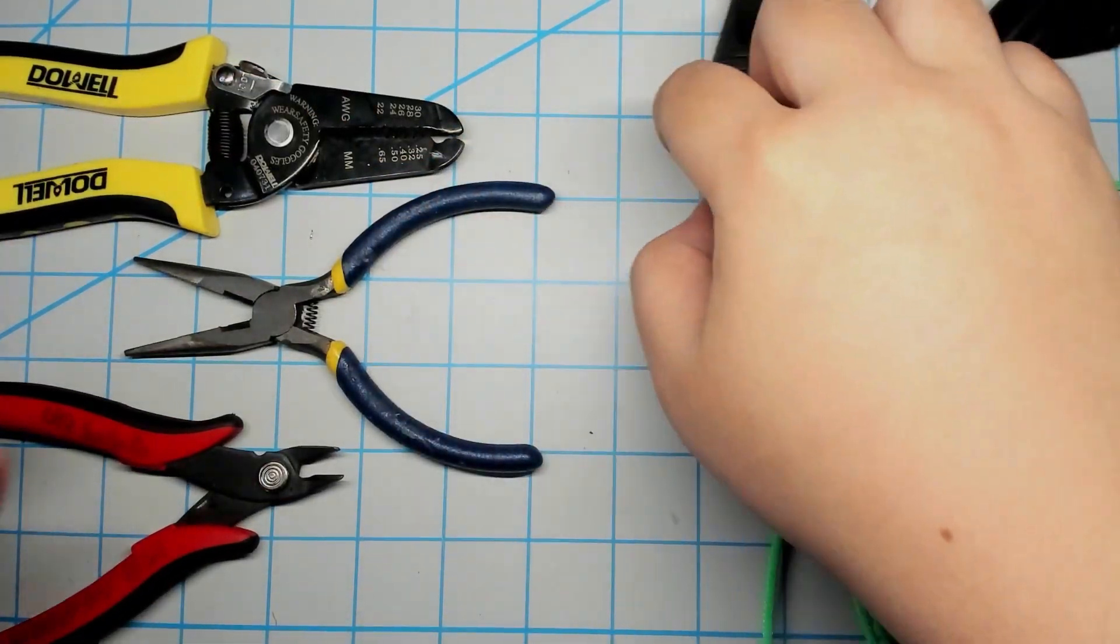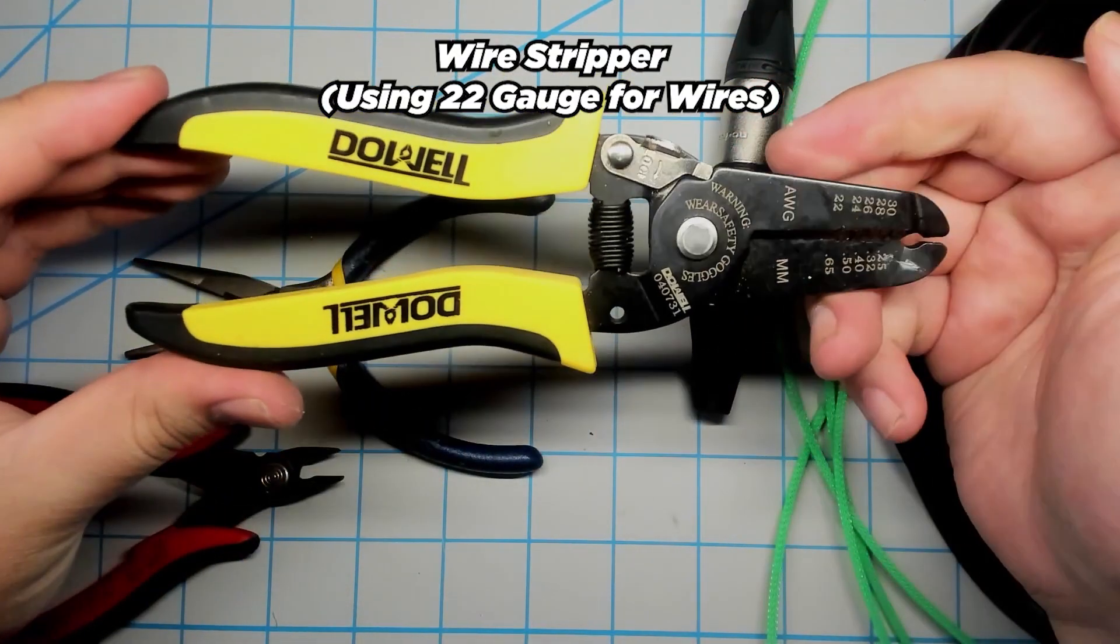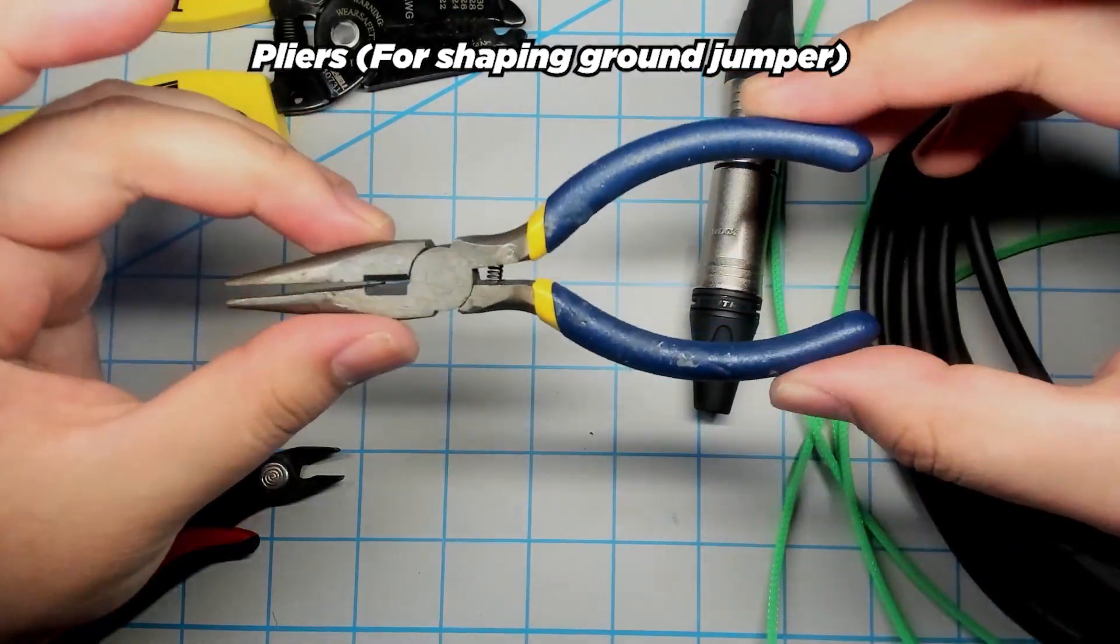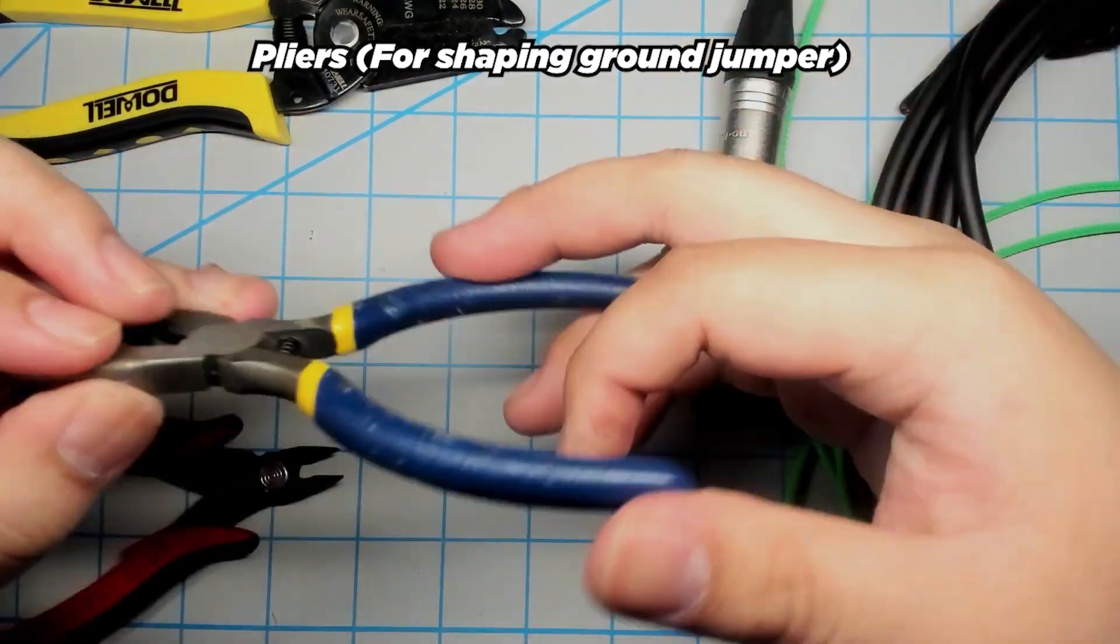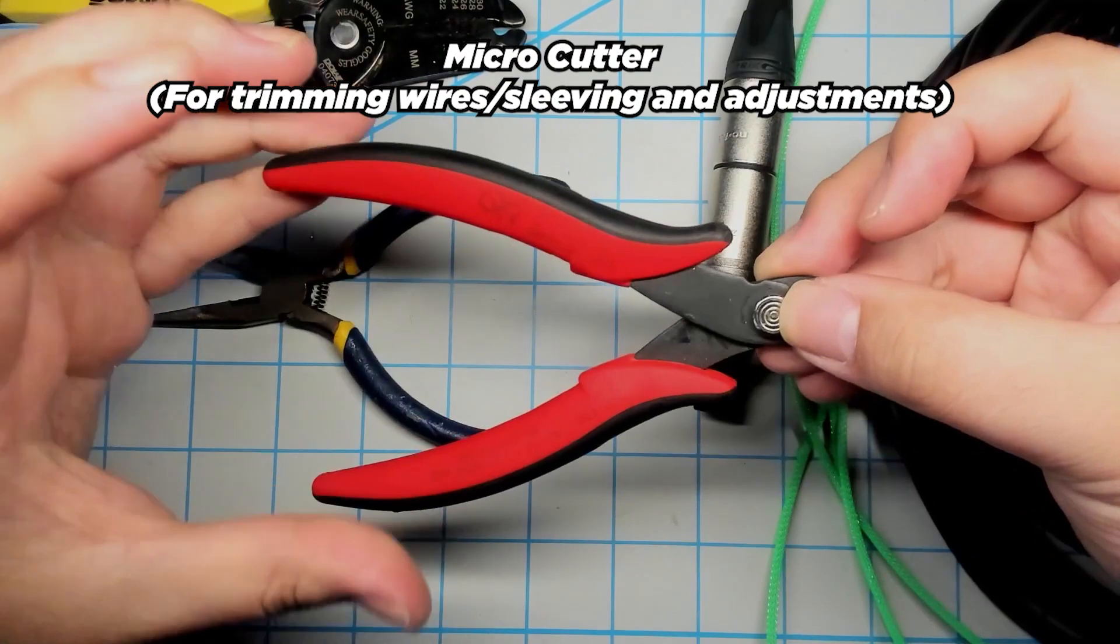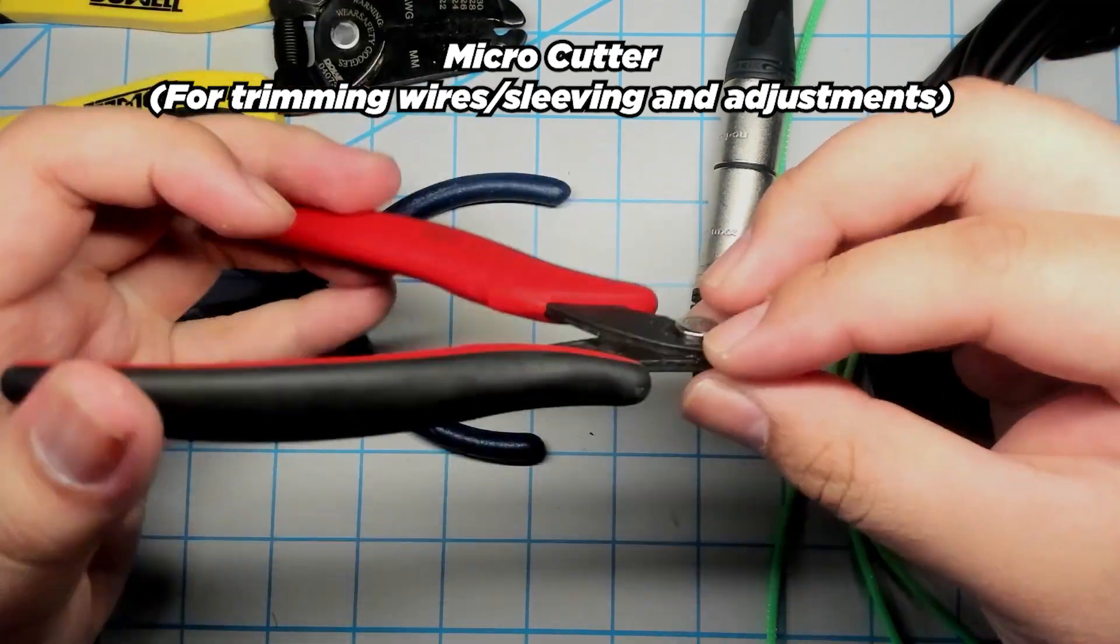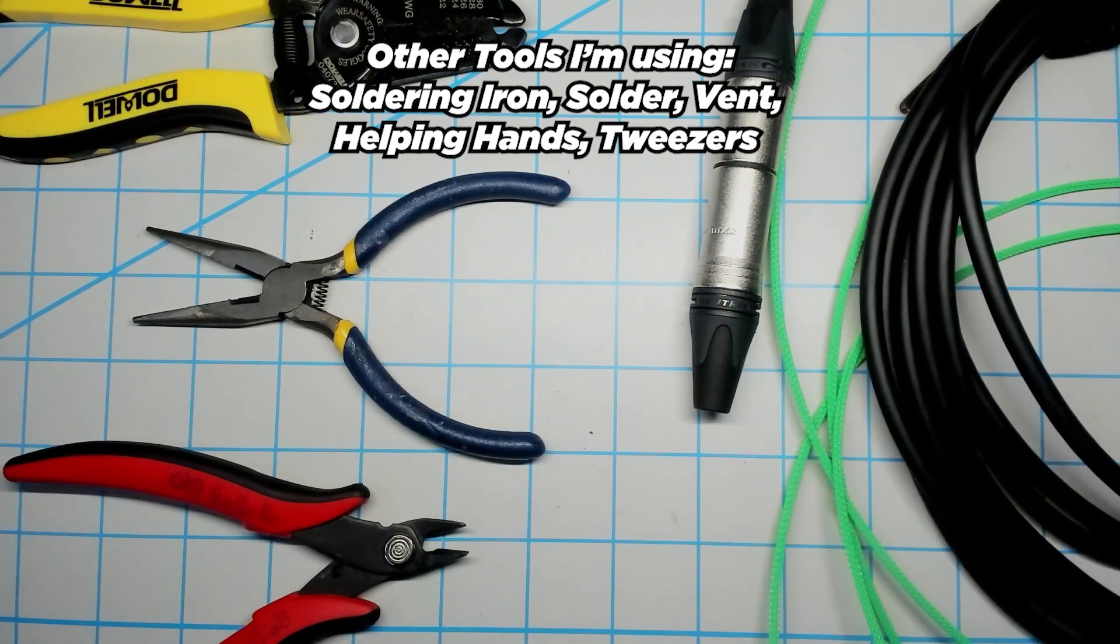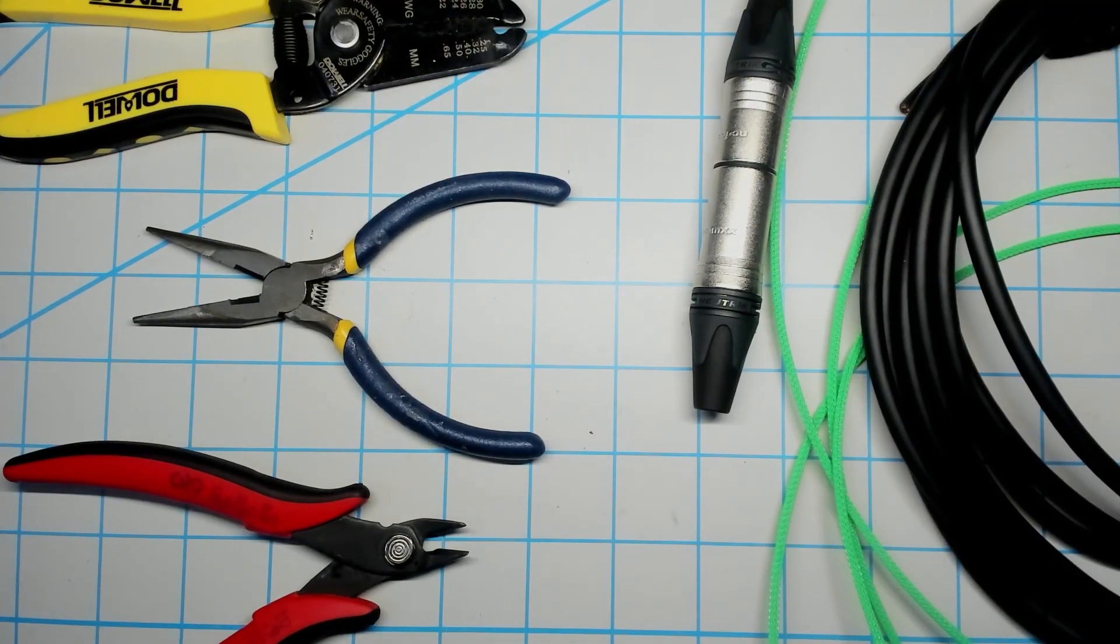For tools I've got a wire stripper as I'll be needing to strip 22 gauge wire, a pair of pliers to help me shape my ground connection, and some micro cutters for trimming wires and sleeving. Some other tools I have on hand include a soldering iron and solder, a fume vent, helping hands, and some tweezers.